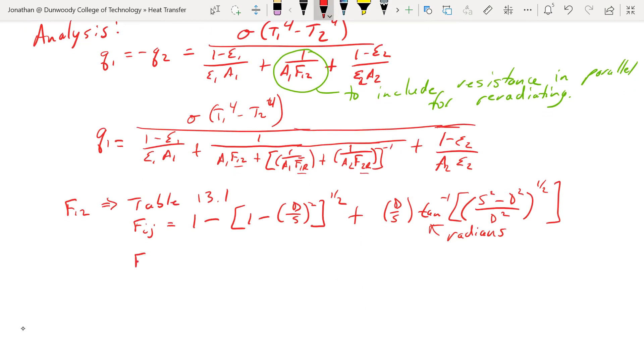So with that, F12 we can get directly: 1 minus 1 minus D is 20 over 50, squared to the 1 half plus 20 over 50, tan to the negative 1 of 50 squared minus 20 squared over 20 squared, square root. So if I plug that in, I found that F12 equals 0.547185. So that's what we have going there. That's also the same as what we'd have going to the other surface.